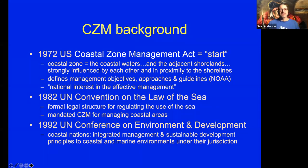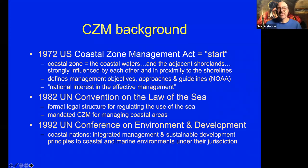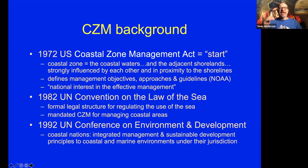This act is a federal law that defines the coastal zone as coastal waters and adjacent shorelands strongly influenced by each other and proximate to the shorelines. Note that this definition differs from our class definition — ours is more expansive, covering the land near the ocean directly influenced by the ocean, and the ocean near the land directly influenced by the land. This act's definition focuses on the aquatic part of the coastal zone and includes estuaries, but that's about as far inland as it goes.